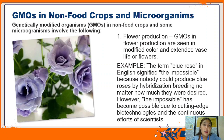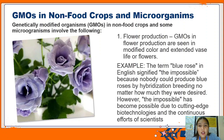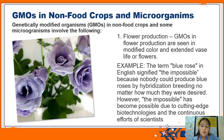GMOs in non-food crops and microorganisms involve the following. For flower production, GMOs are seen in modified color and extended vase life of flowers. For example, the blue rose - in English, the term signifies the impossible because nobody could produce blue roses by hybridization no matter how much they were desired. However, the impossible has become possible due to the cutting edge of biotechnologies and the continuous efforts of scientists who modified the genes of the rose.